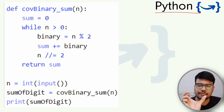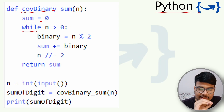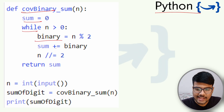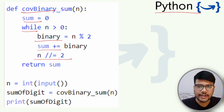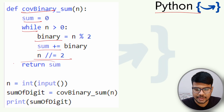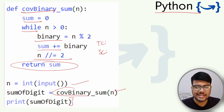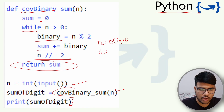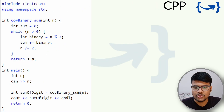You can find the Python, C++, and Java code on GitHub — the link is in the description in a repo named after this question. In Python: define binary_sum(n), initialize sum=0, then while n > 0, compute binary = n % 2, add it to sum, and reduce n using floor division by 2 (n //= 2). Finally return sum. The time complexity is O(log n) since we reduce n by 2 each iteration, and space complexity is O(1).